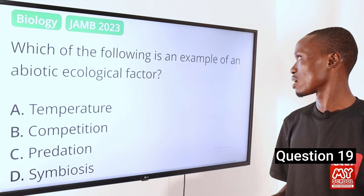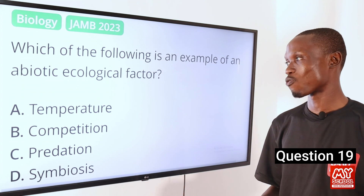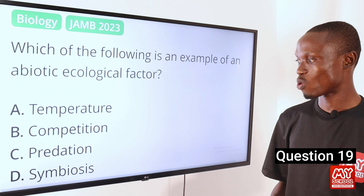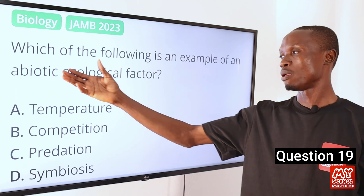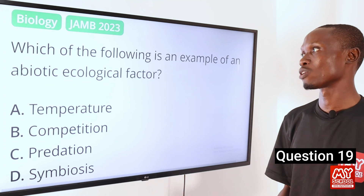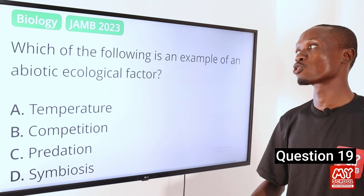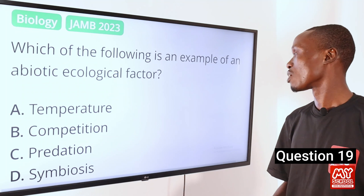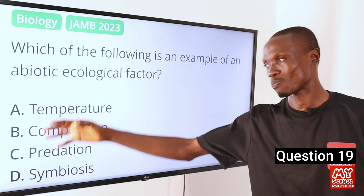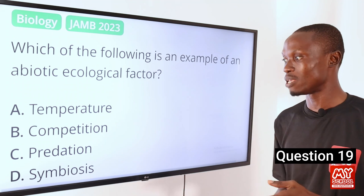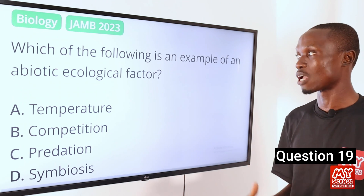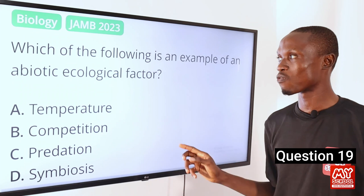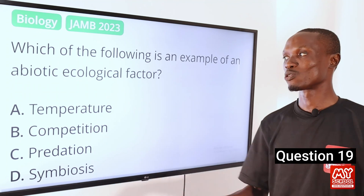Question 19. Which of the following is an example of an abiotic ecological factor? A, temperature. B, competition. C, predation. D, symbiosis. In biology, abiotic means non-living. This question is about non-living factors that affect the ecosystem. The correct answer is option A, temperature. Options B through D — competition, predation, and symbiosis — are all biotic ecological factors.